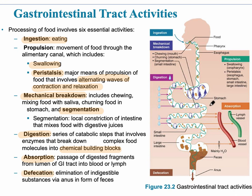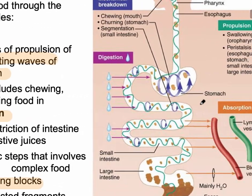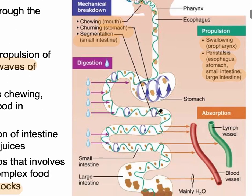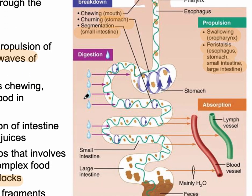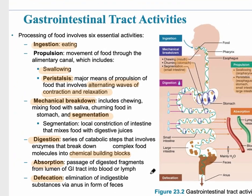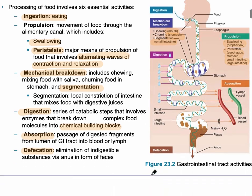A diagram shows that these processes happen at different parts of the body. Ingestion happens at the beginning. Mechanical breakdown happens in several places: the mouth, the stomach in the form of churning, and segmentation in the small intestine. Propulsion and swallowing occur in the oropharynx. Peristalsis happens in several places: esophagus, stomach, and both intestines. Digestion occurs beginning at the stomach, absorption in the small intestine, and defecation at the end of the digestive system.